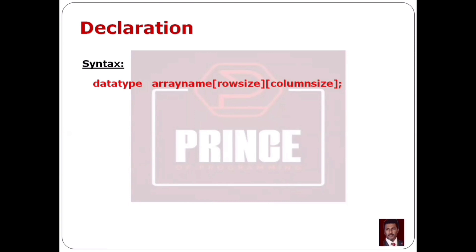We have datatype with array name, then a square bracket for row size, then again a square bracket for column size, then we have a semicolon.